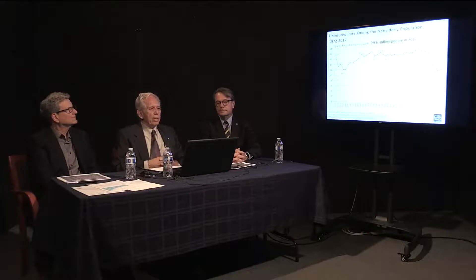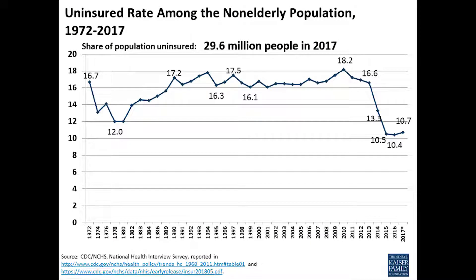Uninsured rate among the non-elderly population. If we look at where we've been in the United States over the last three to four decades, this chart shows that going back to 1972 — seven years after the enactment of Medicare and Medicaid — we still had roughly 16 to 17 percent, that's one out of six non-senior members of our population without insurance. We saw a slight dip in the mid-1970s, which may have been an artifact of differences in the way the uninsurance rate was reported. For decades, we hovered around 16 to 17 percent.